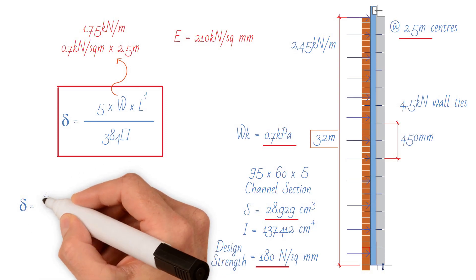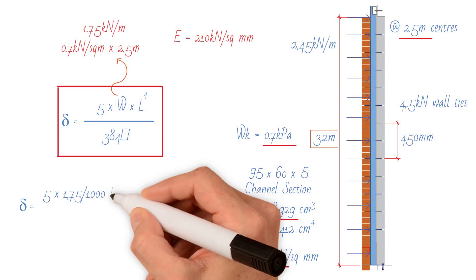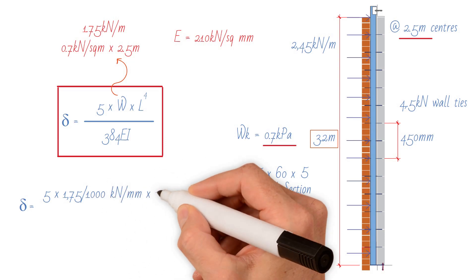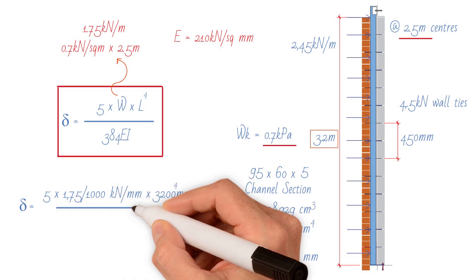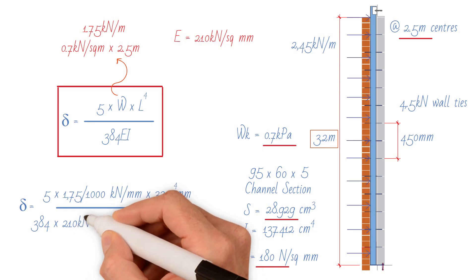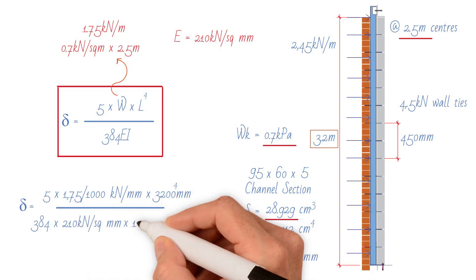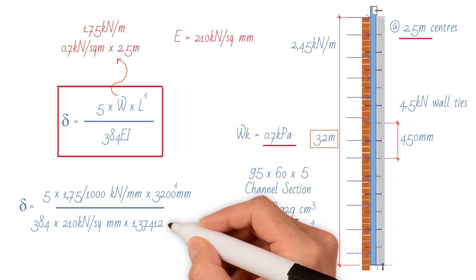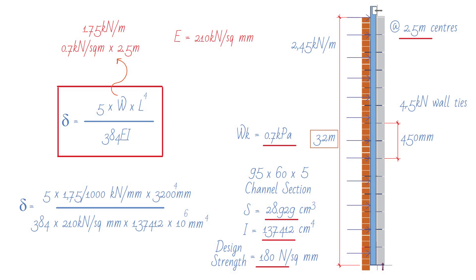The deflection would be 5 times 1.75 divided by 1000 kilonewton per millimeter times 3200 millimeters to the 4th, divided by 384, divided by 210 kilonewtons per square millimeter, divided by 1.37412 times 10 to the 6 millimeters to the 4th. This gives us a value of 8.28 millimeters.